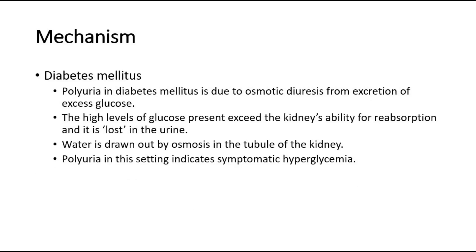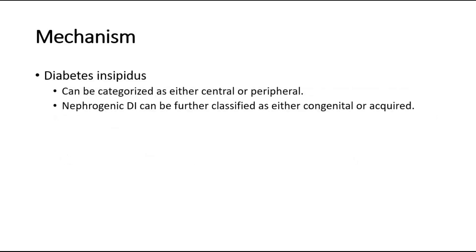In diabetes mellitus, polyuria is due to osmotic diuresis from excretion of excess glucose. The high levels of glucose exceed the kidney's ability for reabsorption, so it is lost in the urine, and water is drawn out by osmosis in the tubule of the kidney. Polyuria in this setting indicates symptomatic hyperglycemia.